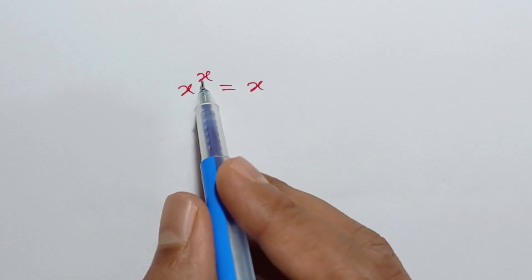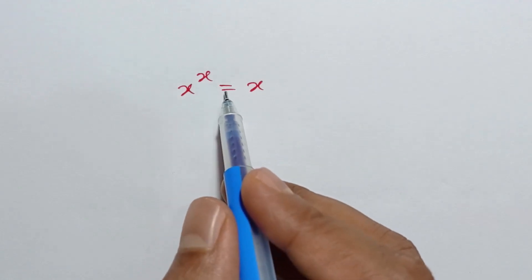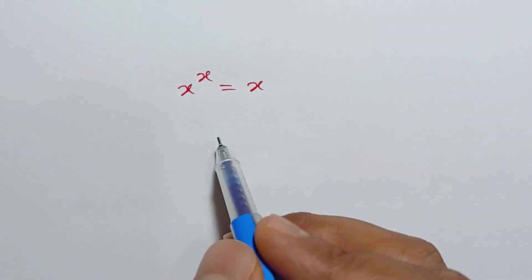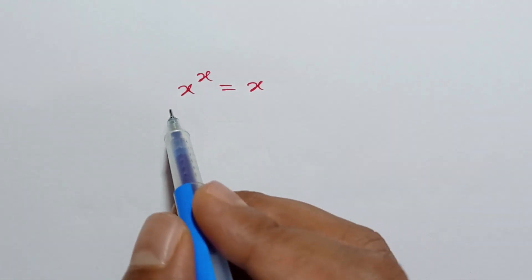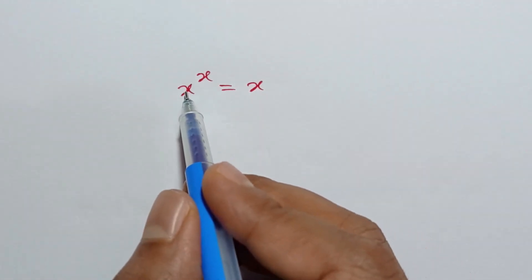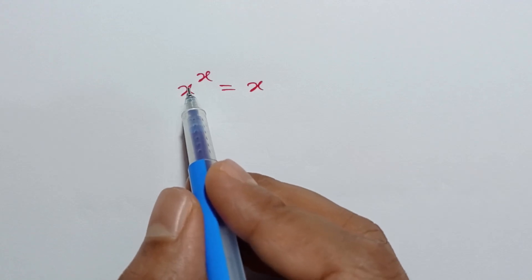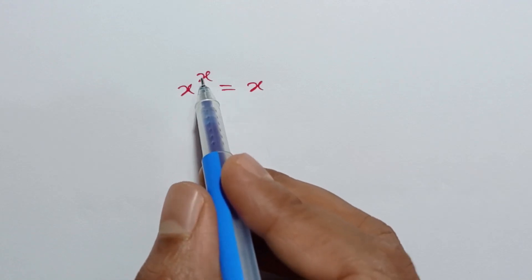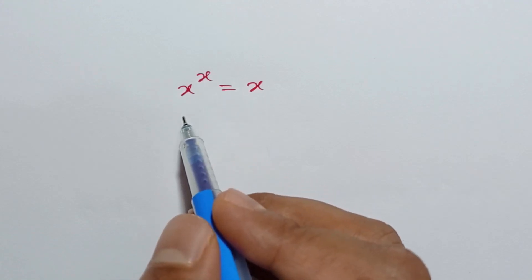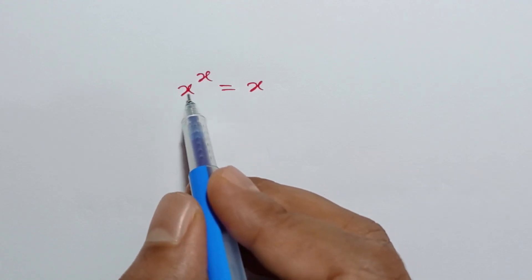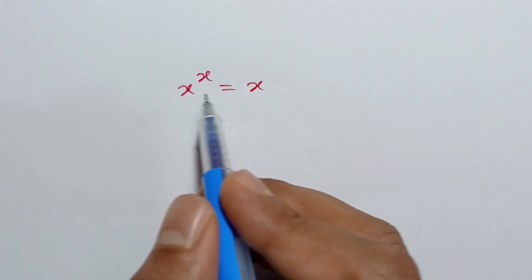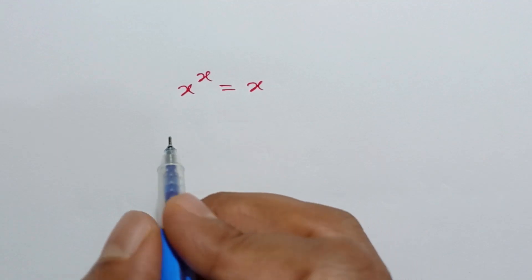Hi everyone. In this video I am going to show how to solve x to the power x is equal to x. Here x is not equal to 0, because 0 to the power 0 is undefined, so we can divide both sides by x.